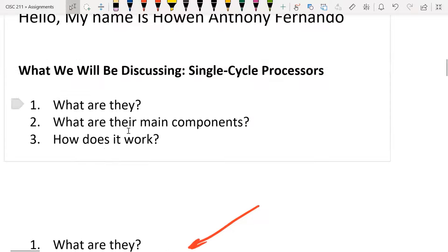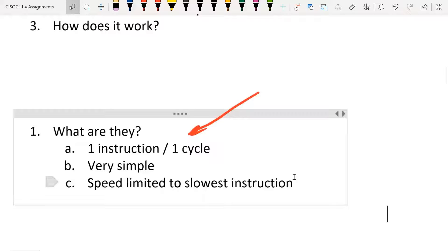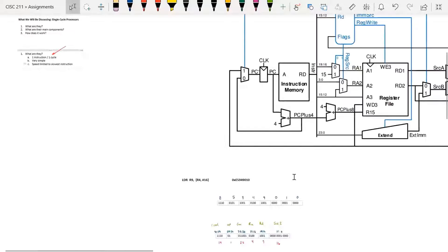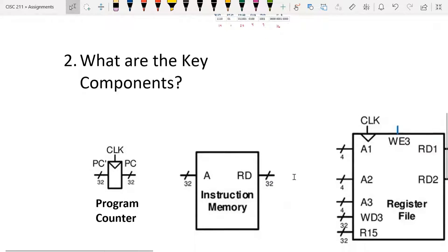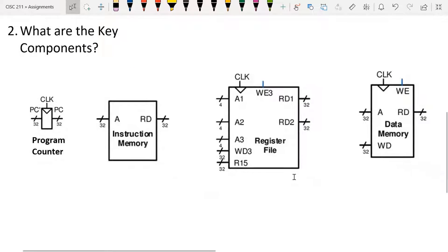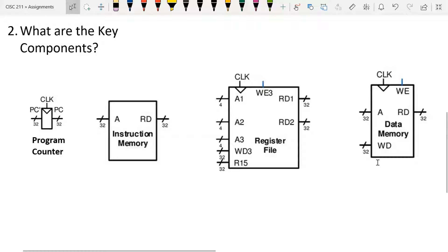The second question to answer: what are their main components? In order to understand that huge diagram, we have to understand the main components of the single cycle processor first. The four key components are the program counter, the instruction memory, the register file, and the data memory.